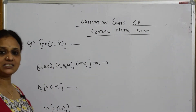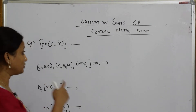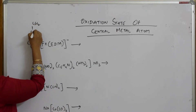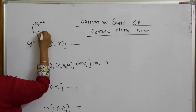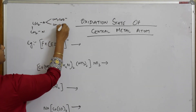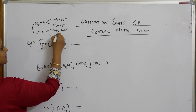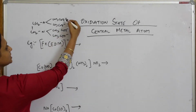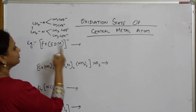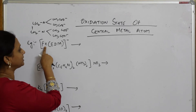For example, if EDTA (ethylene diamine tetra acetate) is given, I've already shown you the structure in that video. The structure involves CH2-CH2-NH and CH3COO⁻ groups — four acetate groups — so the charge on EDTA is minus 4.